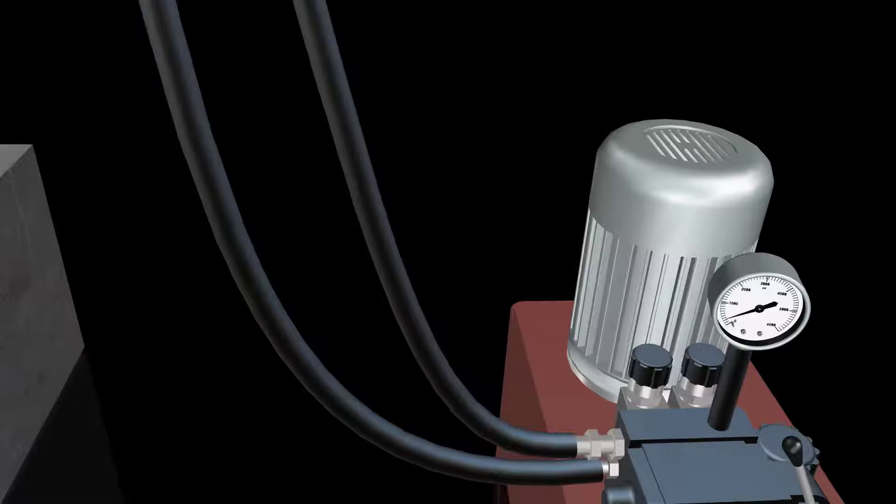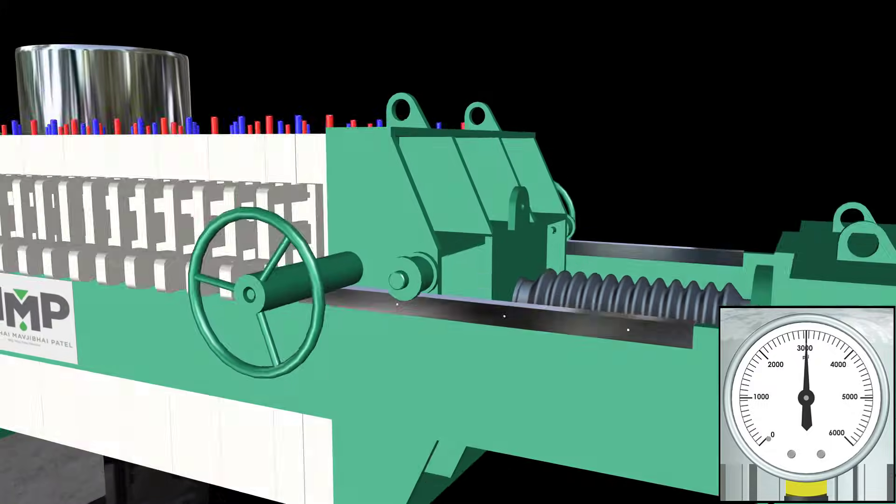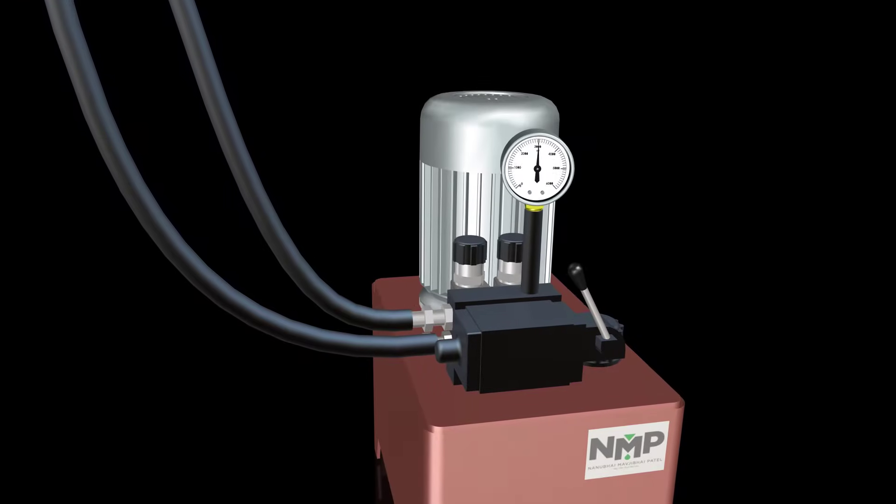Now pull the lever of direction control valve in forward direction. The cylinder will now start moving forward, pressing the moving head against the plate by cylinder.